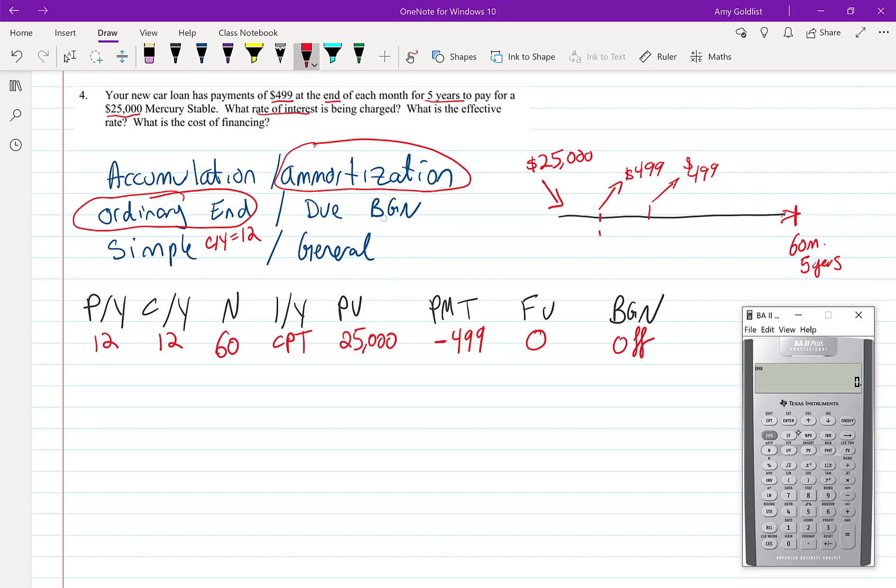So we go into here. It's clear and our PY, CY should still be 12. Our N is going to be 60. Our interest rate is what we're trying to find. We're borrowing $25,000 and making payments of negative $499.